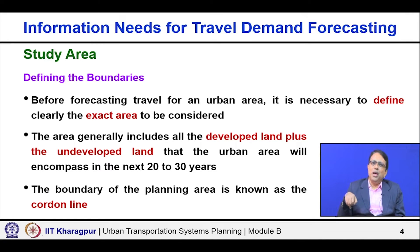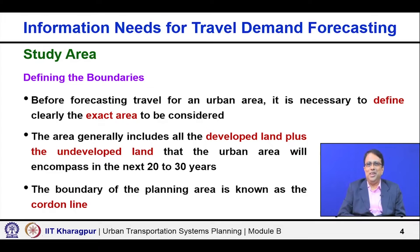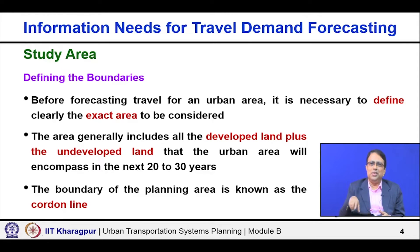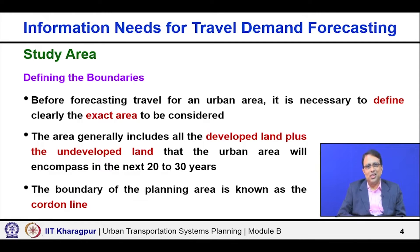This imaginary boundary we draw to demarcate our study area — and I emphasize it is imaginary, we are not building a wall — is called a cordon line. The cordon line defines the boundary of the study area. Sometimes we also call it the external cordon.